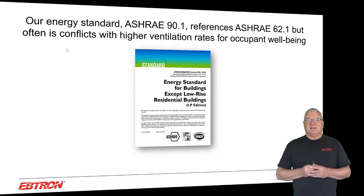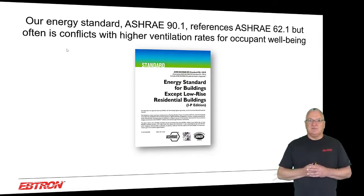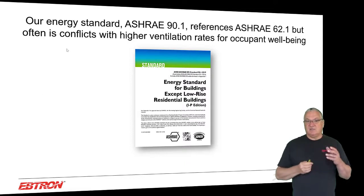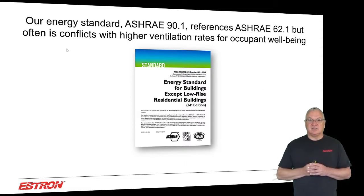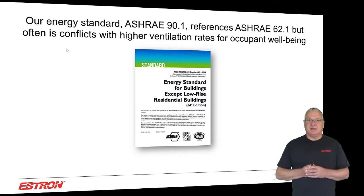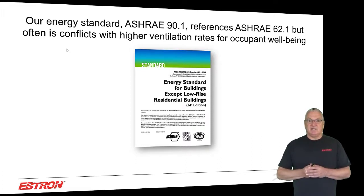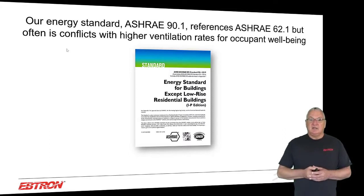There is a conflict here, because when you look at Standard 90.1 — which is really followed throughout the country and the world — one of the problems I have with 90.1 is it kind of goes against ventilation. Everything it's doing is trying to reduce ventilation rates and save energy. In my opinion, it's created some of the problems we have today, particularly as a result of its requirements for demand control ventilation. And there are public review documents out there now trying to even expand demand control ventilation, so we're going to have to be really cognizant about where this is going.